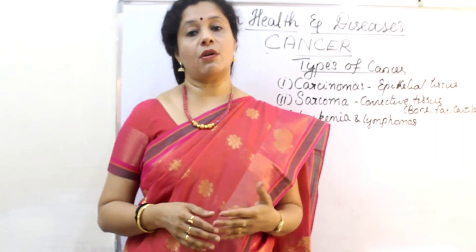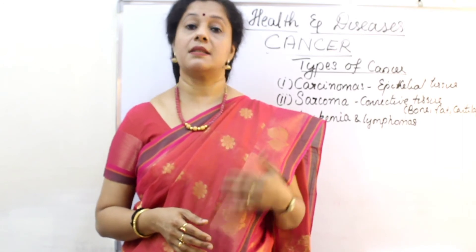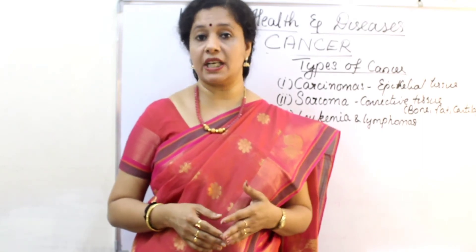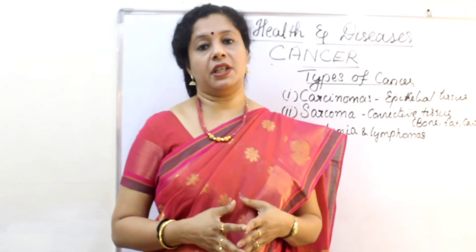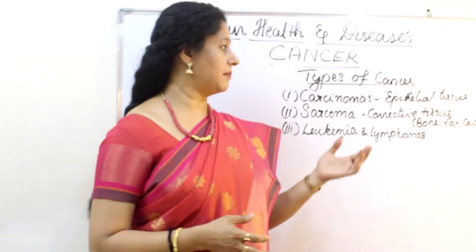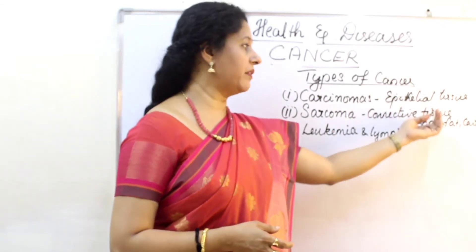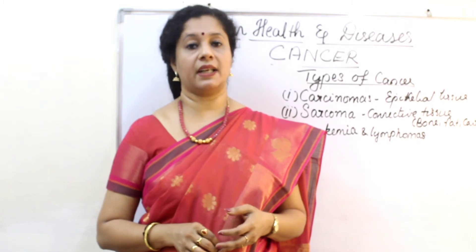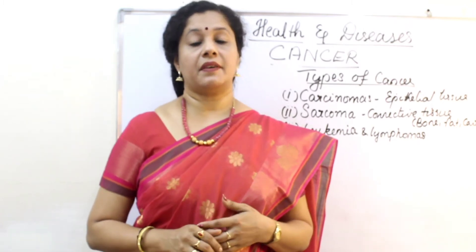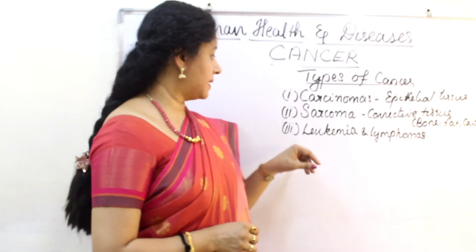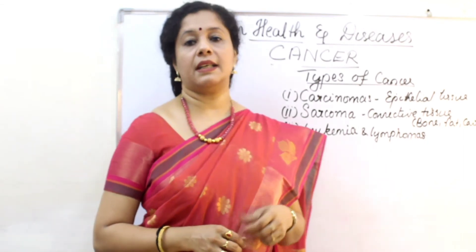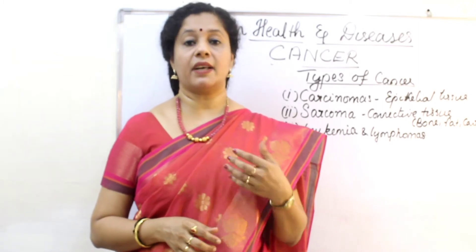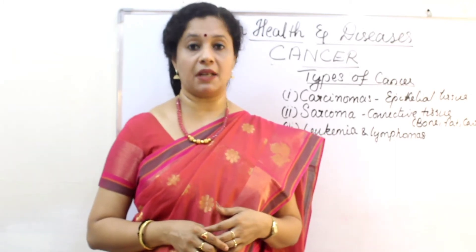In females, the most common type of cancer is breast cancer followed by cervical cancer, whereas in males it is prostate cancer. Cancers of mesodermal origin tissues are called sarcomas — for example, connective tissues like bone, fat, and cartilage. Osteosarcoma is bone cancer, myosarcoma is muscular cancer, and liposarcoma affects adipocytes. The third type is leukemia or lymphoma, affecting hemopoietic cells — that is blood cancer, where uncontrolled multiplication of white blood cells occurs.